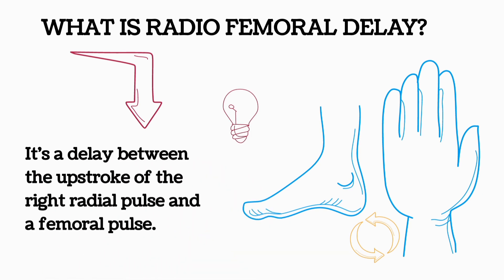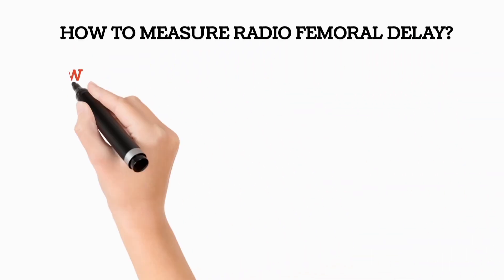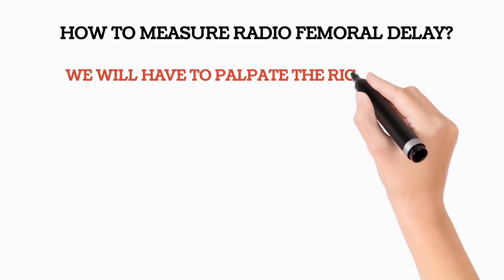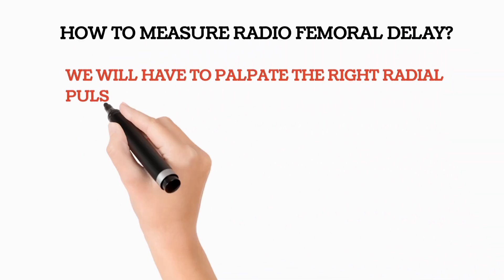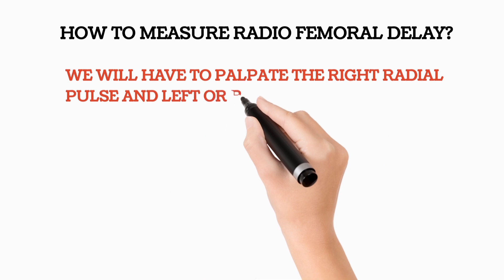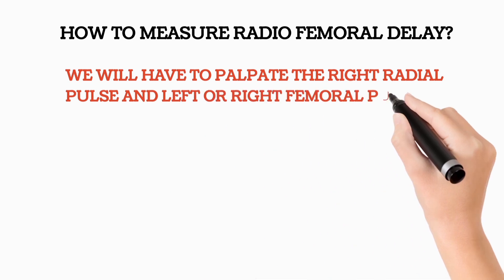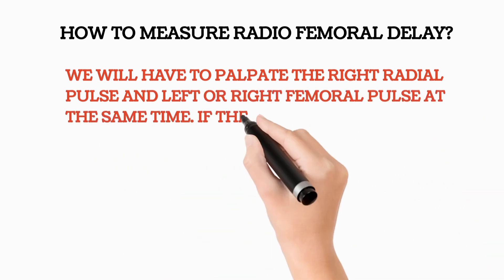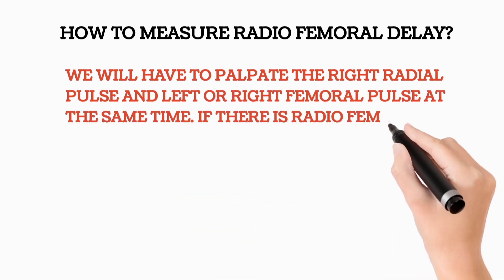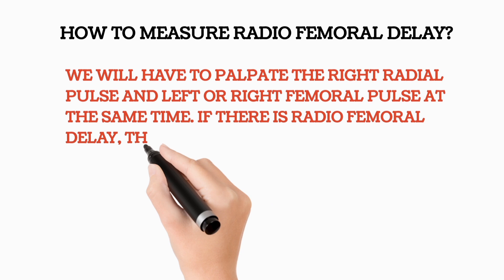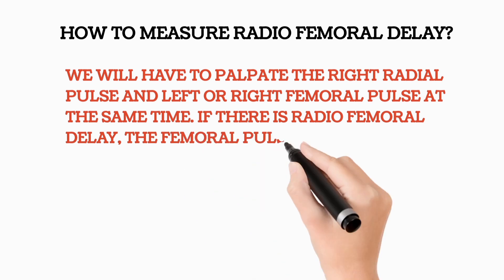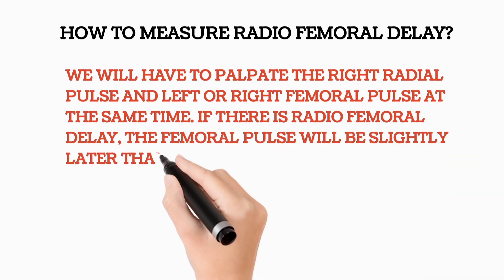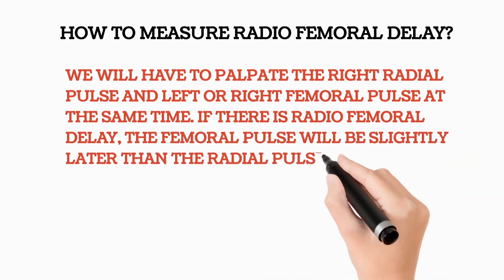To measure the radio-femoral delay, we have to palpate the right radial pulse and the left or right femoral pulse at the same time. If there is a radio-femoral delay, the femoral pulse will be felt slightly later than the radial pulse.